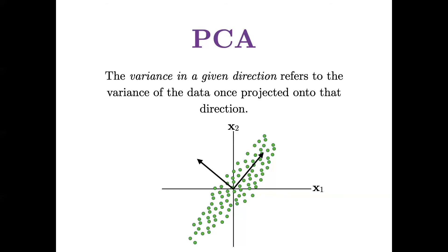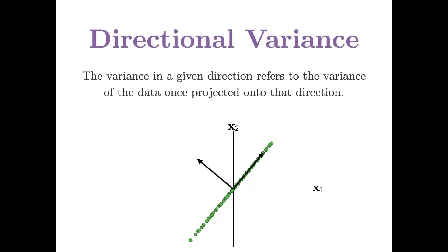Now, when we talk about directional variance, we're talking about the variance of the data once projected onto that direction. So if I take these green points and I project them onto the first vector that we chose, that's what I mean by directional variance. It's the variance of the data in that direction.